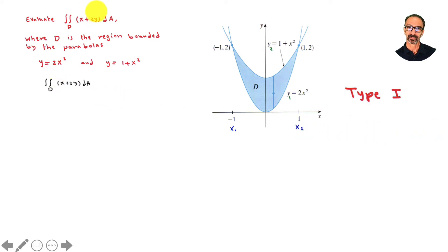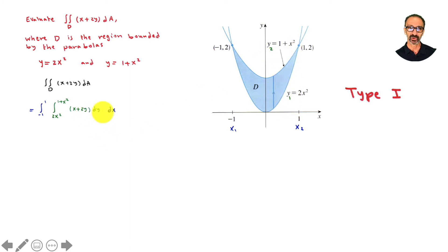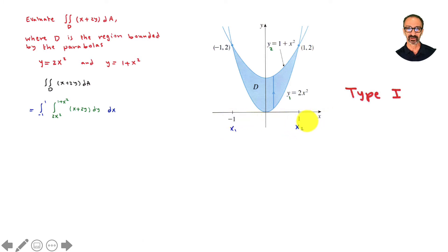Our double integral becomes dy dx because we are moving with y. We go from y1 = 2x² (below) to y2 = 1 + x² (above). If you switch them, it's wrong. For the outer integral, x goes from −1 to 1 — not from 1 to −1.